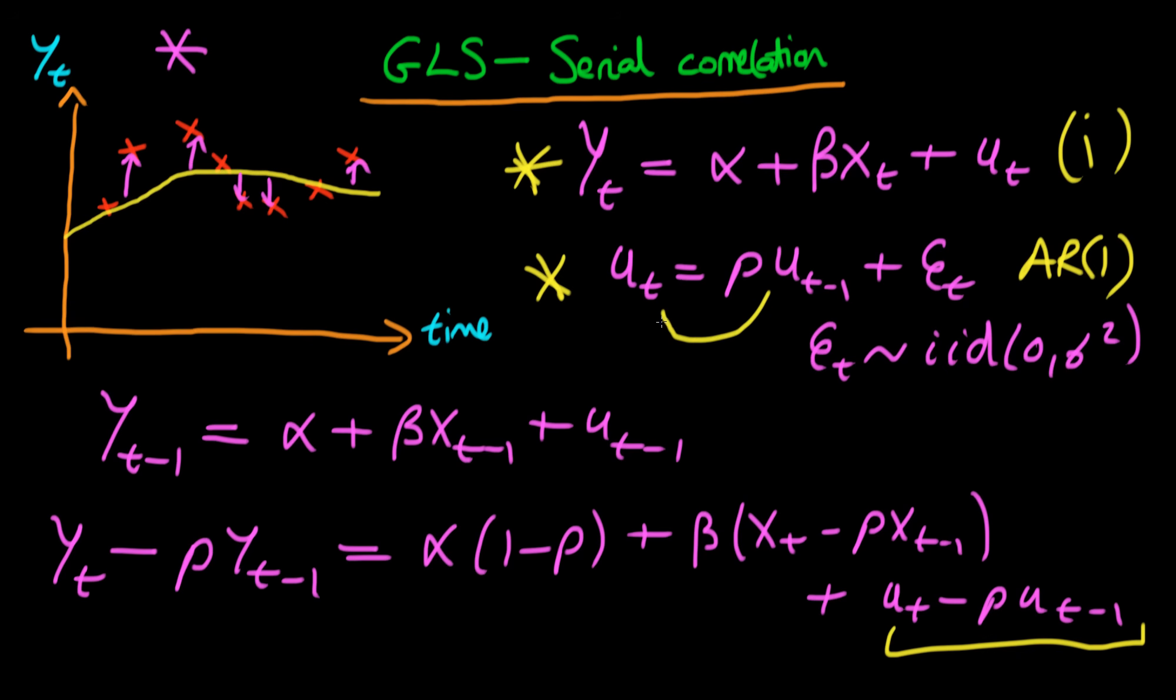In fact, if I was to take over to the left-hand side this ρ times ut-1, I would just have exactly what we have down here at the bottom. So actually this last term here is just et, because that's what I get if I take over this ρut-1 to the other side. And by definition, et is iid, so it's no longer serially correlated.